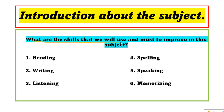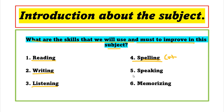What are the skills that we will use and must improve in this subject? First, we have reading — you must know how to read. Next, writing — you do writing. Then listening — you must listen, using your sense of hearing. And spelling — you must know how to spell, like C-A-T, cat. Speaking is also one you need to do — you need to obtain it because you need to communicate. And memorizing — you need to know how to memorize, so it's easier for you to read, write, listen, spell, and speak.